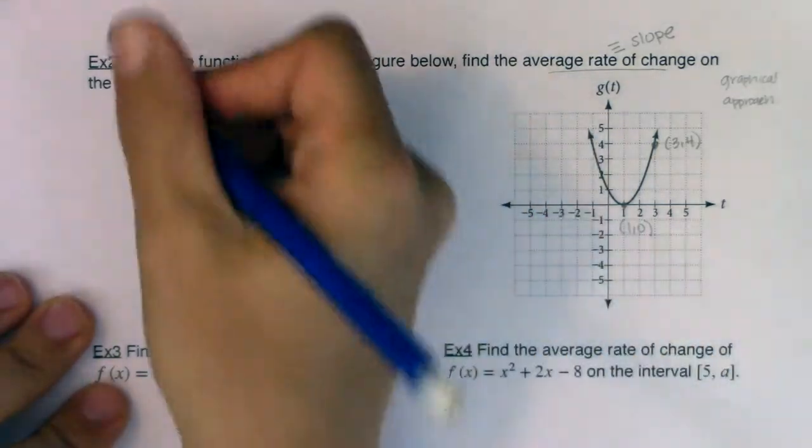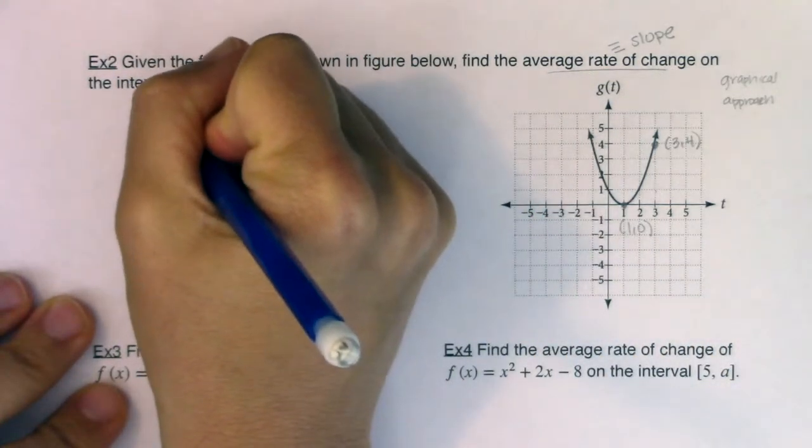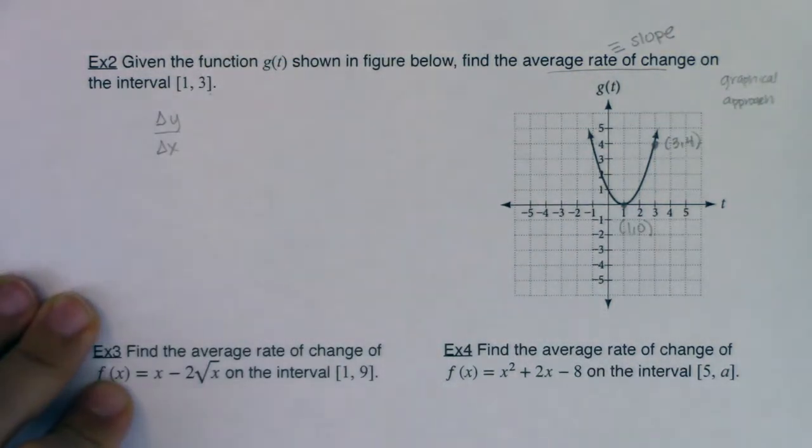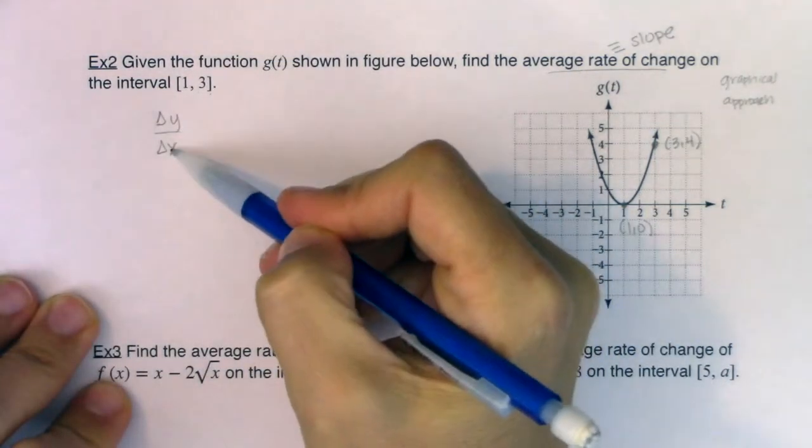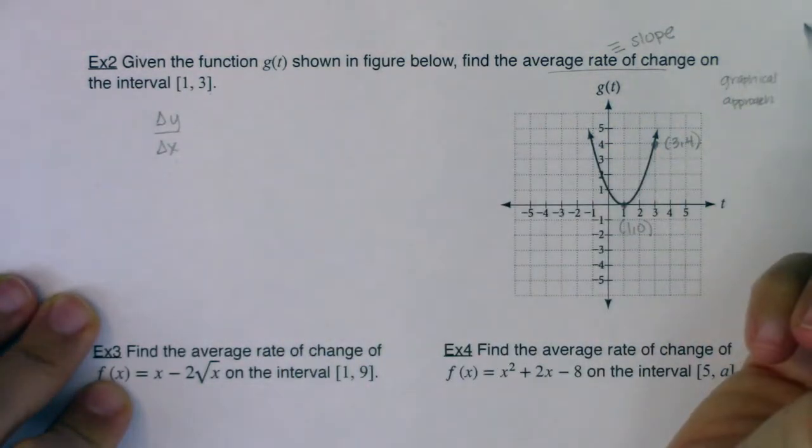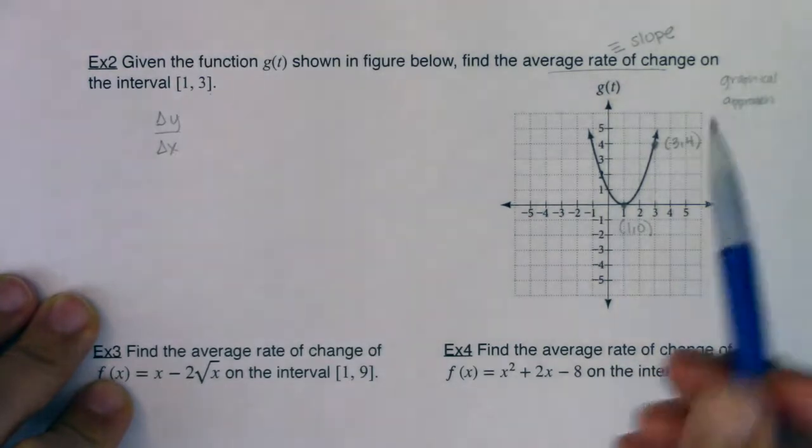So if I would like average rate of change, I would like delta y over delta x. But as I mentioned before, we're not going to get married to y and x. I know that we're very comfortable with those and that's what we're used to. But let's think about what letters we need for our particular problem.